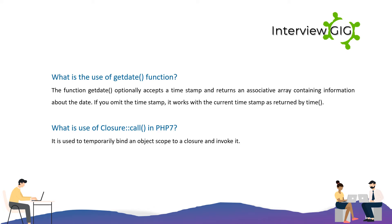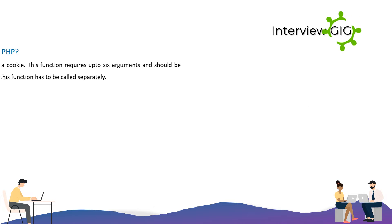What is the use of Closure::call in PHP 7? It is used to temporarily bind an object scope to a closure and invoke it.